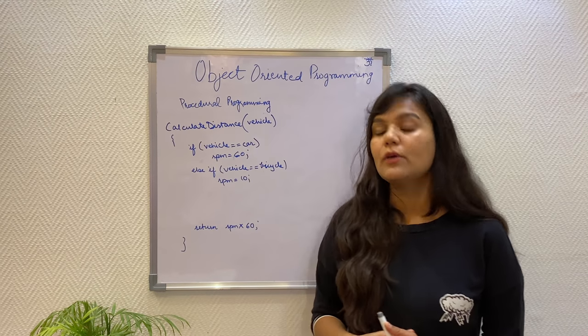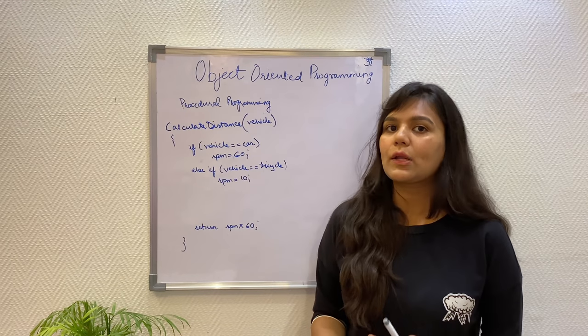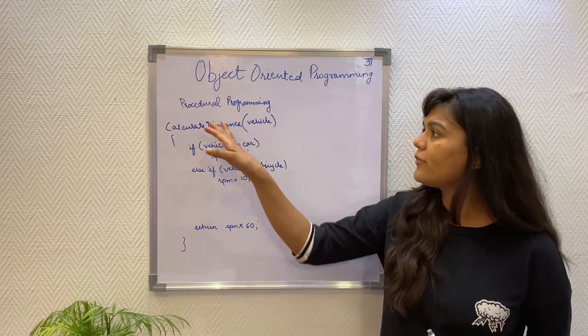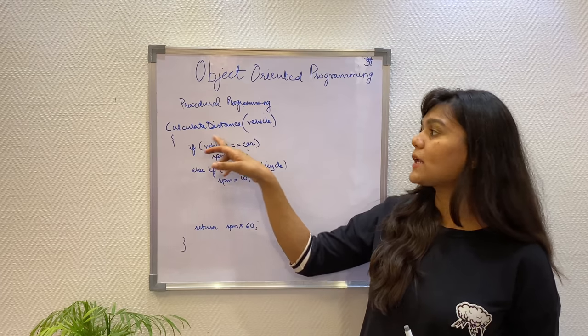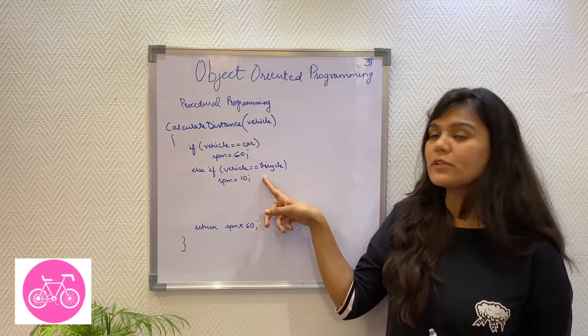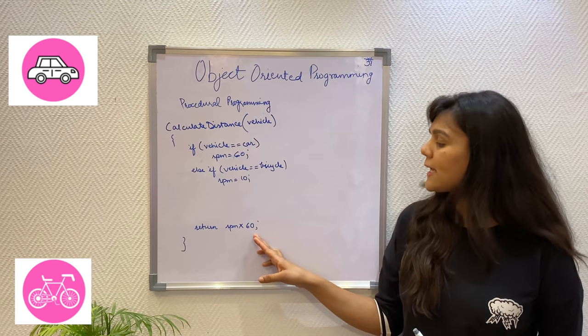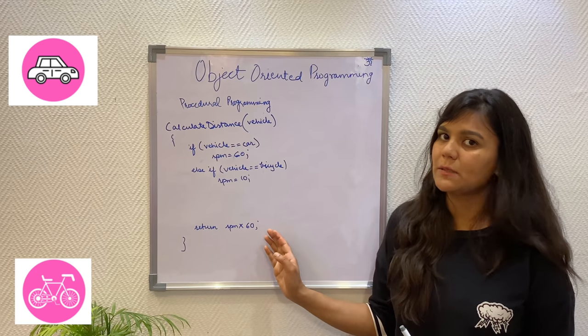In procedural programming, we will think in terms of achieving the task at hand which is to calculate the distance. So I have written a small function that calculates the distance based on assigning the RPM to each of the vehicles and then multiplying this RPM with the time travel. The time I have taken is one hour, which is 60 minutes.